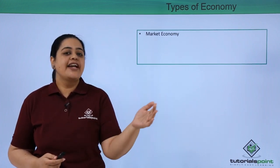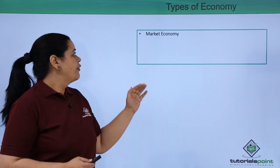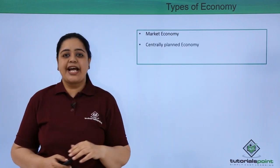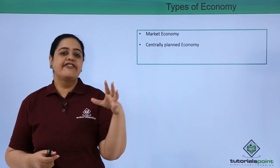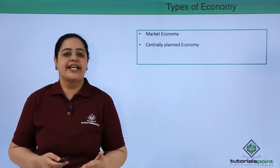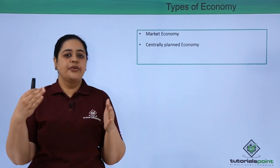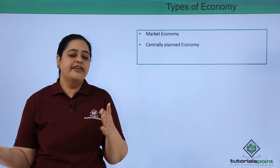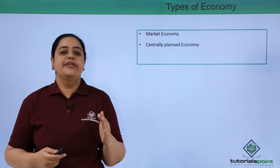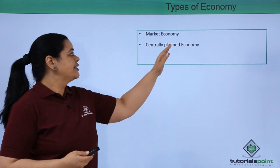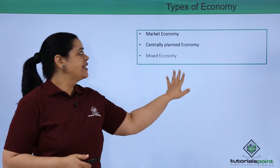Generally, when the private owners are involved in market economy, they will try to produce those goods which can make them earn maximum profits. Now when it comes to centrally planned economy, it is totally opposite of market economy. Here, everything is owned by the community, and the goods produced are those which are required by the society and the nation.